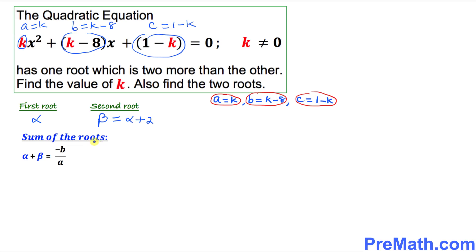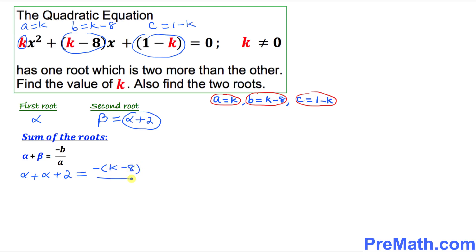In the next step we find the sum of the roots. We know the formula: sum of roots is alpha plus beta equals −b/a. In our case, beta equals alpha plus two, so alpha plus (alpha plus two) equals −b/a. B is K minus 8, and A is K, so this becomes −(K − 8)/K.